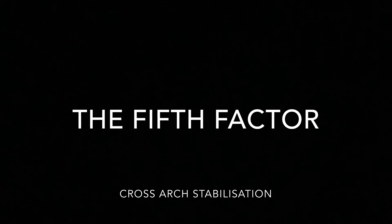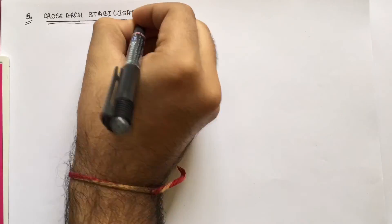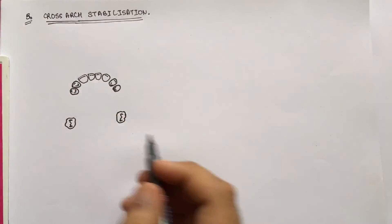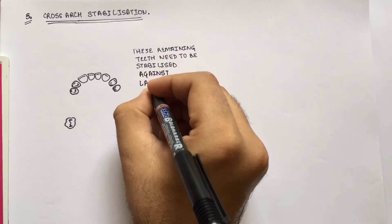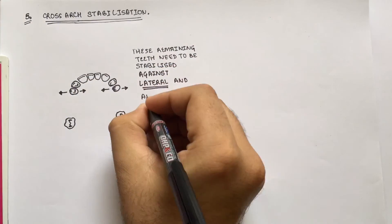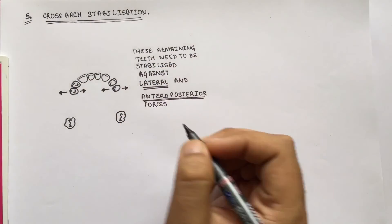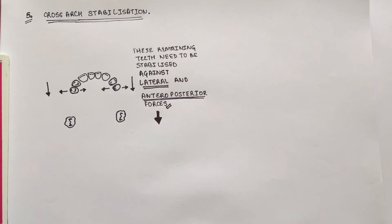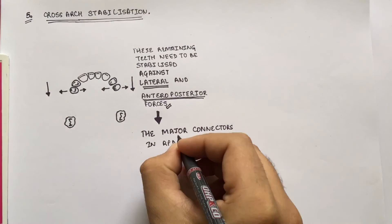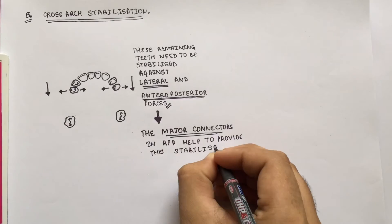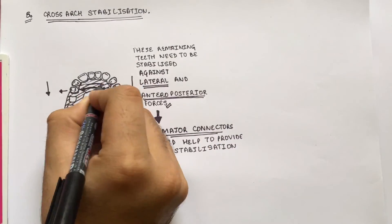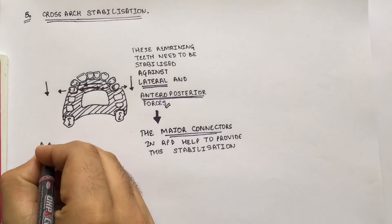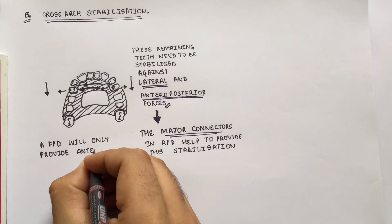The fifth factor is cross-arch stabilization. When the remaining teeth need to be stabilized against lateral and anteroposterior forces, a removable partial denture is indicated. The major connectors in an RPD help provide this stabilization, whereas an FPD will only provide anteroposterior stabilization.